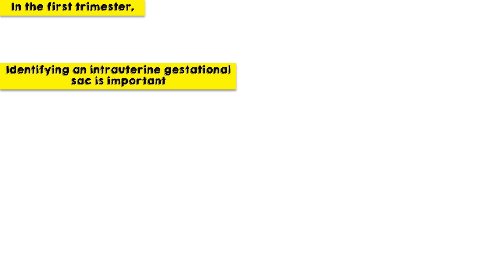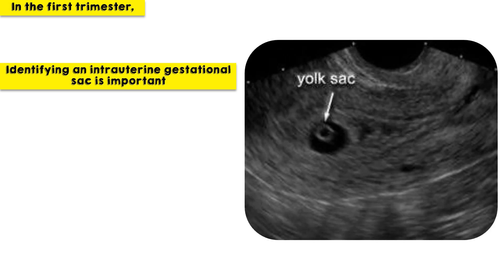In the first trimester, identifying an intrauterine gestational sac is considered a major priority. In this image, the white arrow denotes the yolk sac within the gestational sac, which confirms the intrauterine pregnancy.